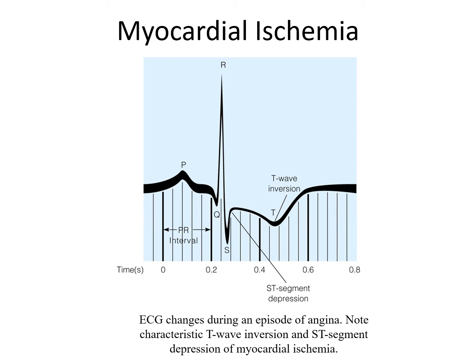There are EKG changes during an episode of angina as a result of myocardial ischemia. We notice that there is a T-wave that is inverted. Typically, the T-wave is in an upward deflection, so here it has a downward deflection, which would be considered inverted. That is one thing we do see with ischemia in terms of EKG changes.